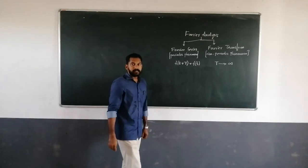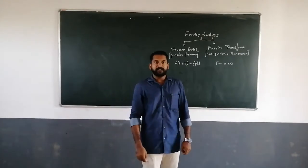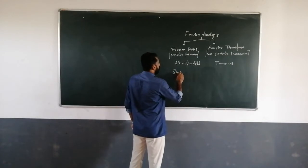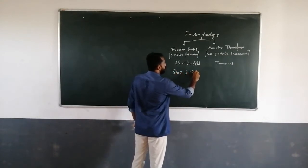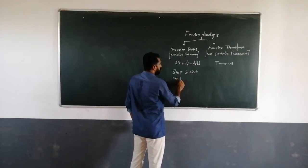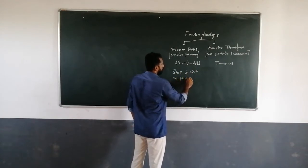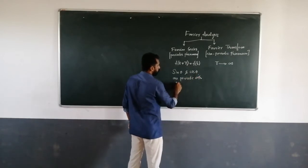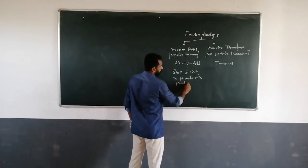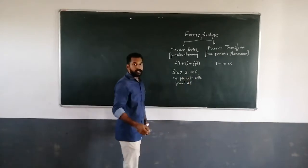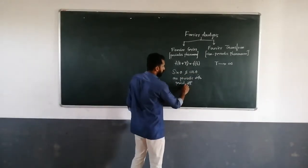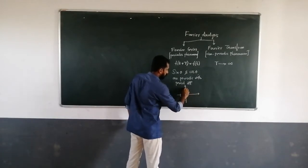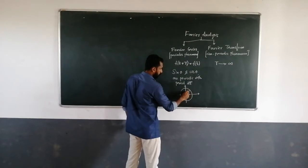Now, in mathematics there are several periodic functions. For example, sin θ and cos θ are periodic with the period 2π. We can define sin θ and cos θ as the coordinates of a point on a circle.